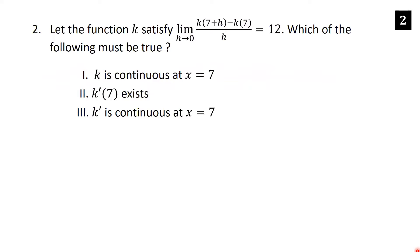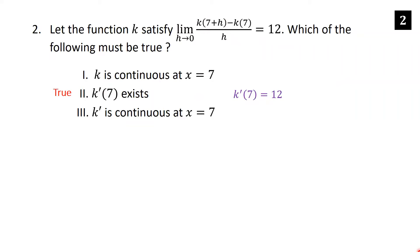Let function k satisfy the limit as h→0 of [k(7+h) − k(7)] / h = 12. Which of the following must be true? Notice that this expression is exactly the definition of k′(7) = 12. In particular, k′(7) exists and equals 12, so the second statement is true.